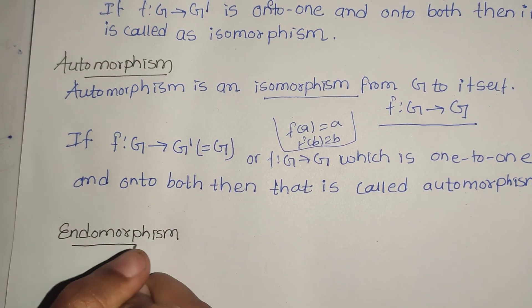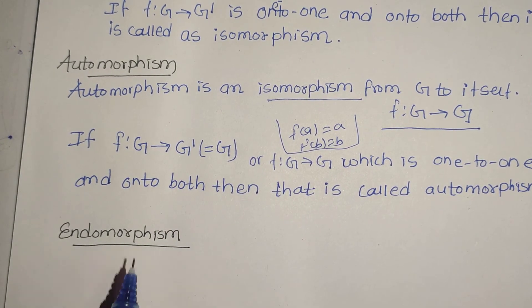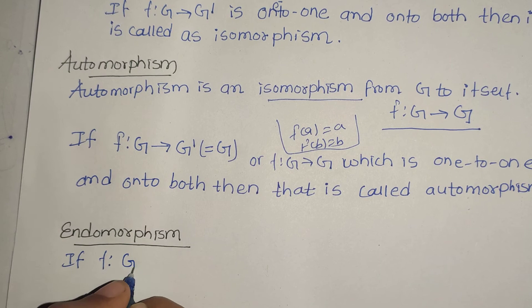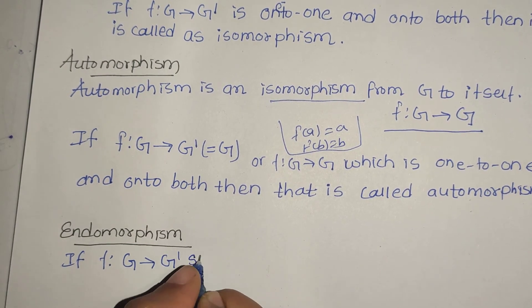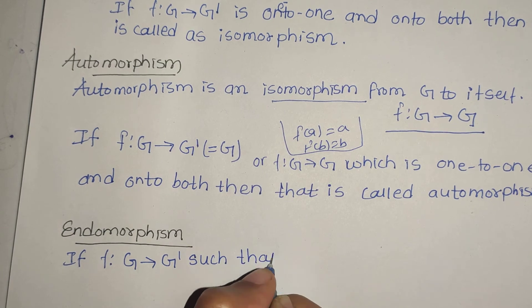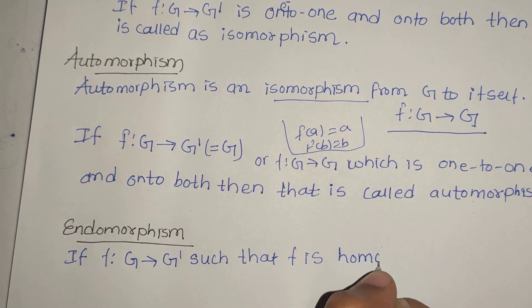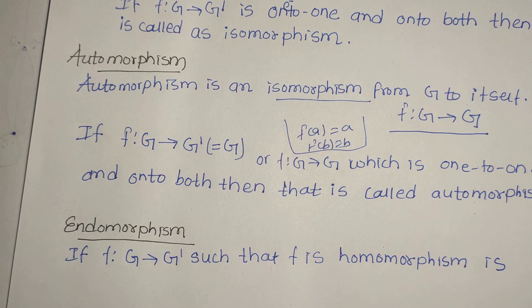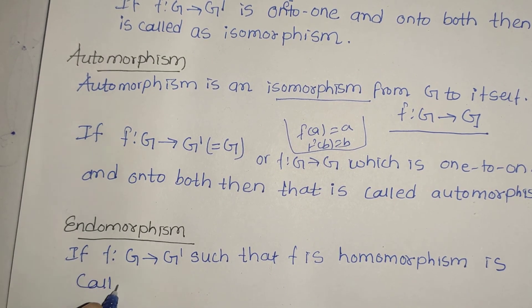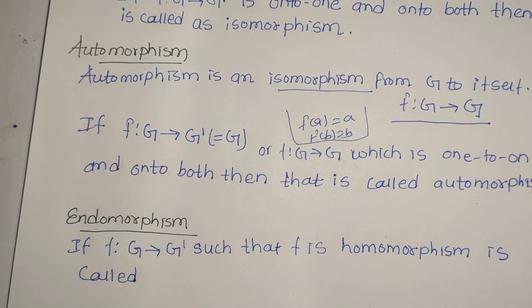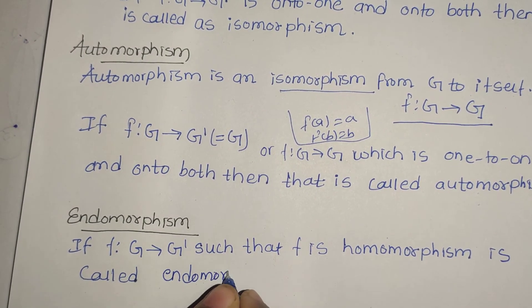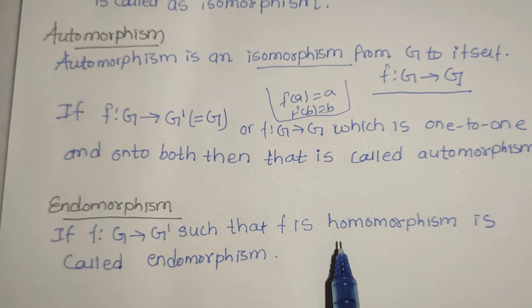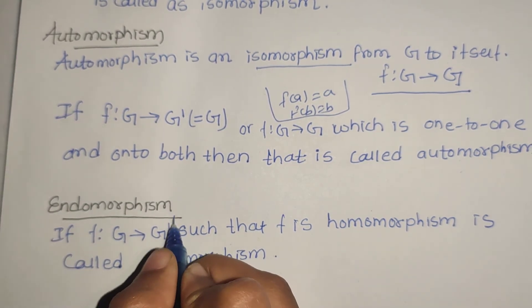And the last one is endomorphism. Let me give examples connecting these concepts. If f: G → G' such that f is homomorphism, this is called endomorphism.